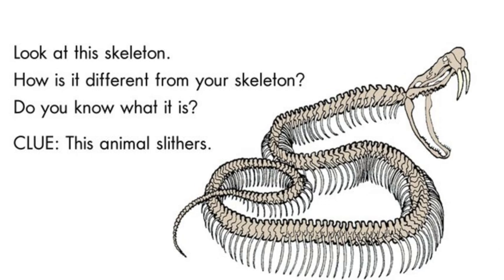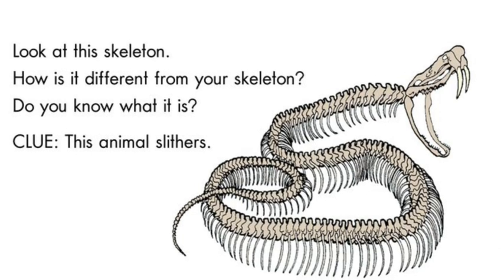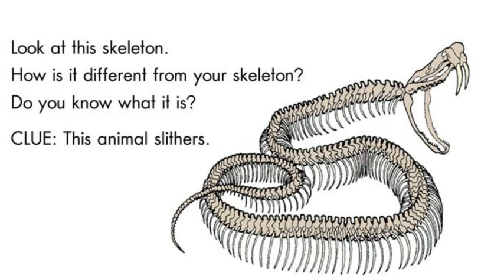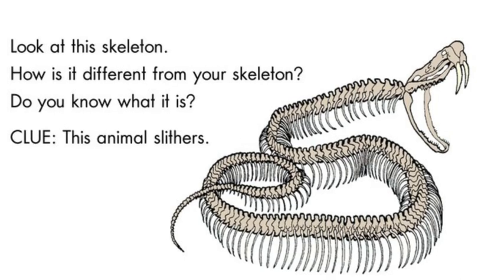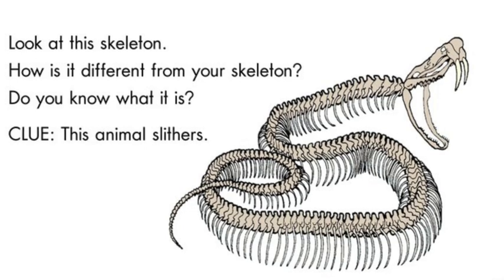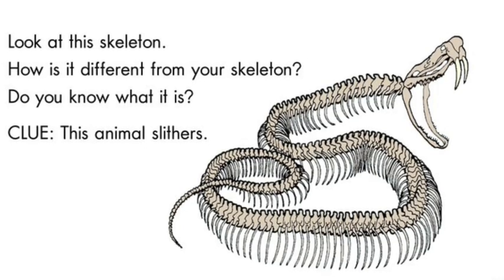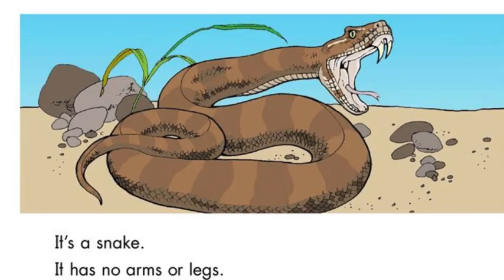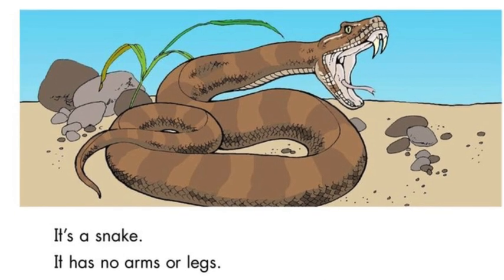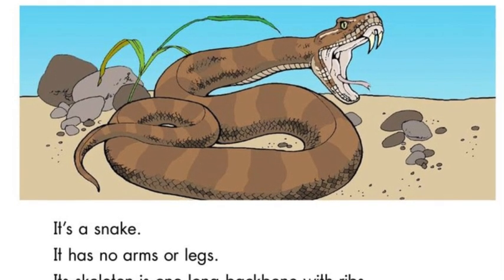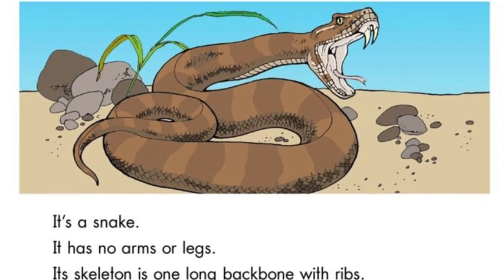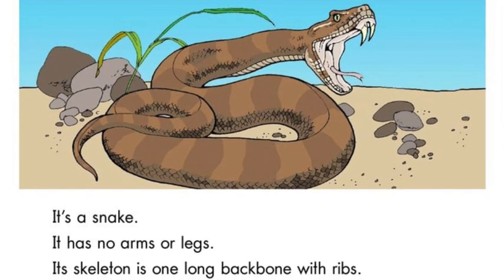Look at this skeleton. How is it different from your skeleton? Do you know what it is? Clue: this animal slithers. It is a snake. It has no arms or legs. Its skeleton is one long backbone with ribs.